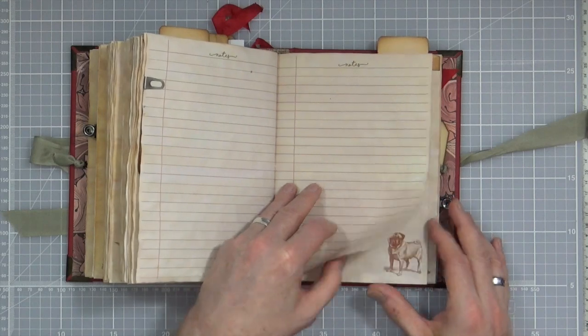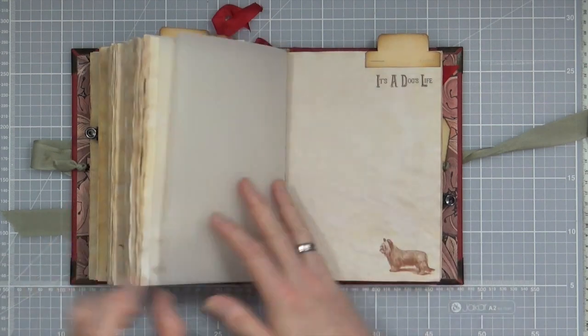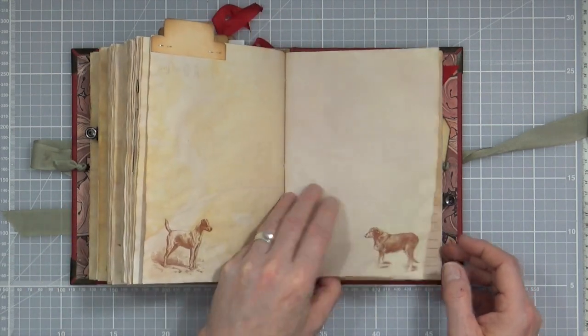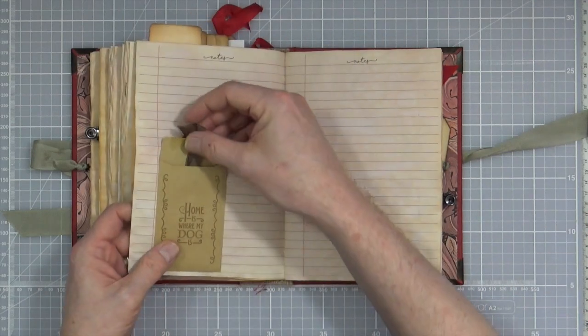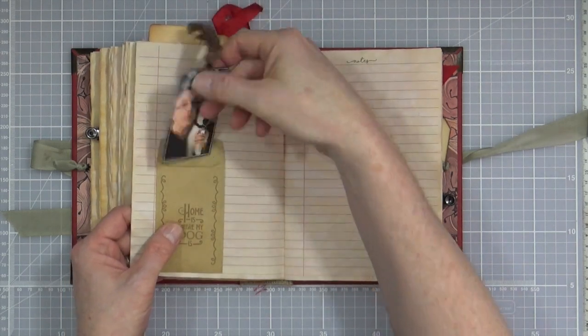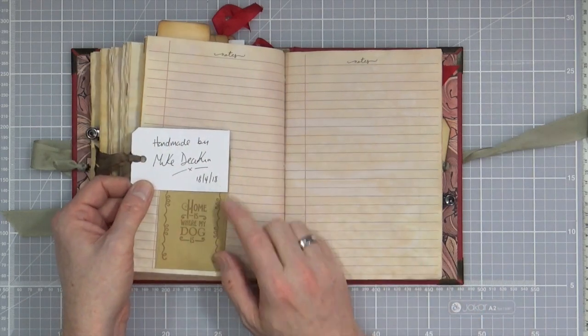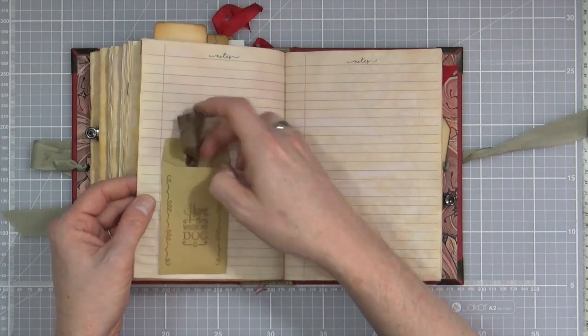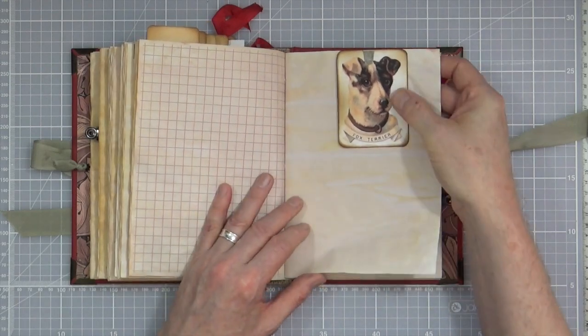But she also asked for a photograph or at least a picture of Mr. Bentley to go in here as well. So somewhere in here there is a little pocket with a tag that I've included of me and Mr. Bentley and on the back of that I've just written handmade by me and then the date.